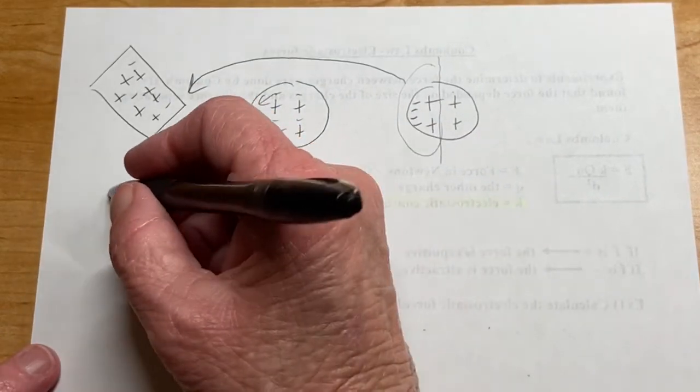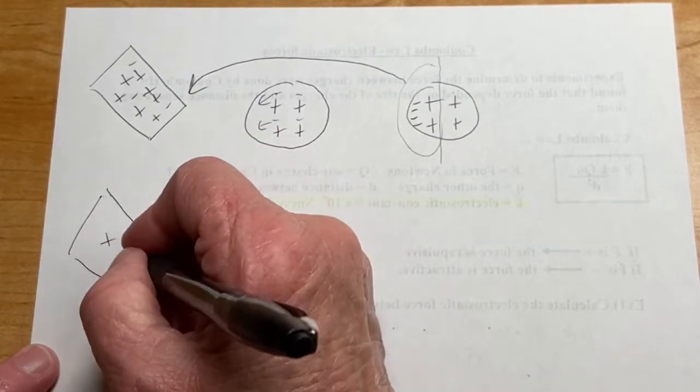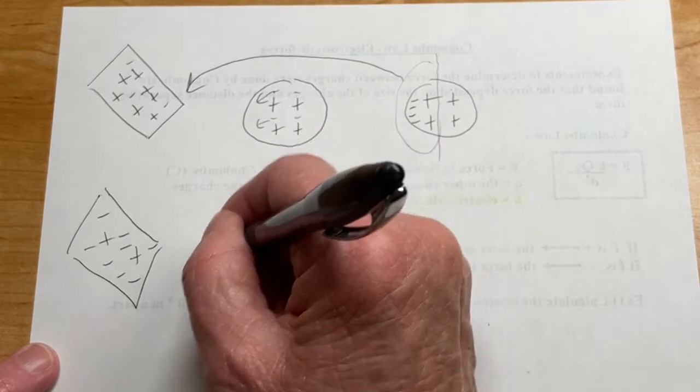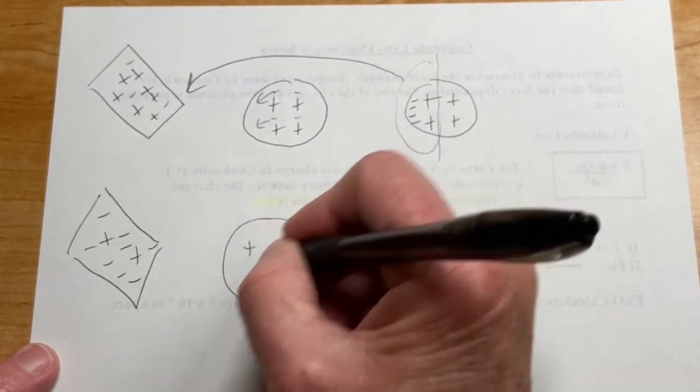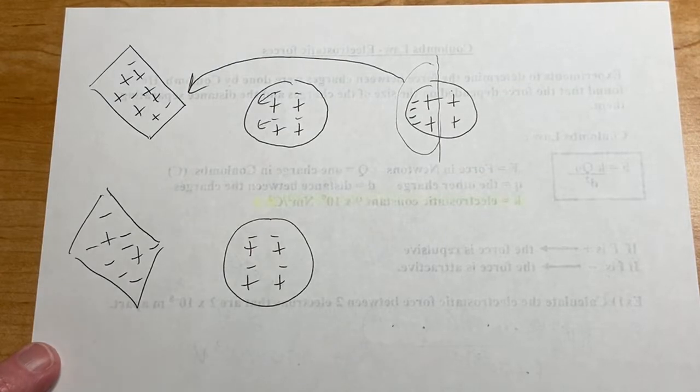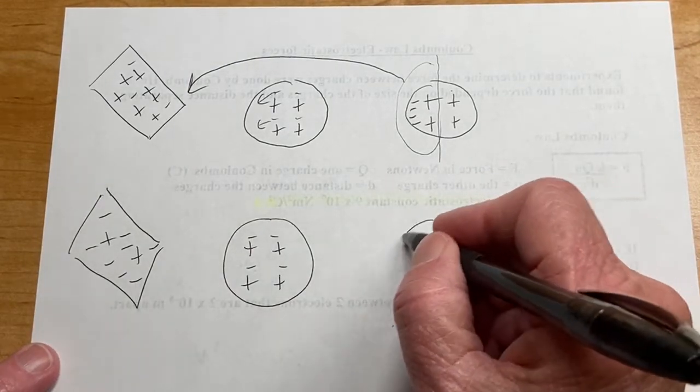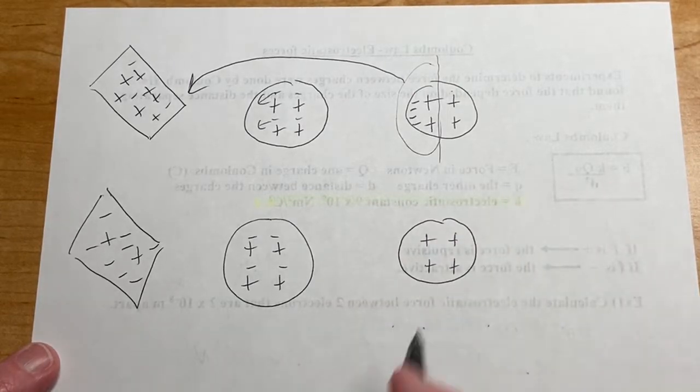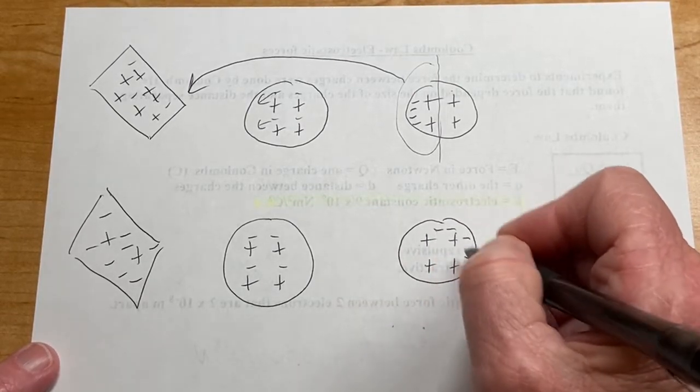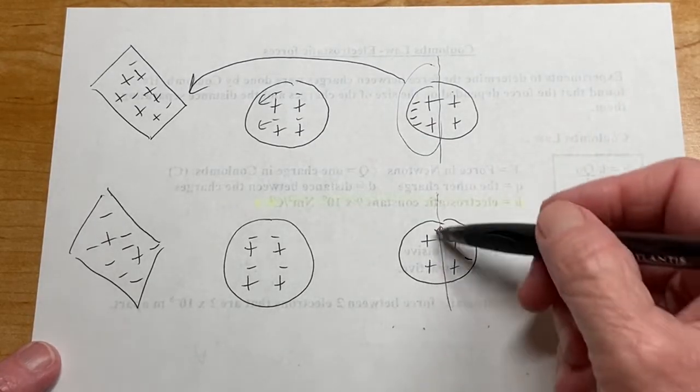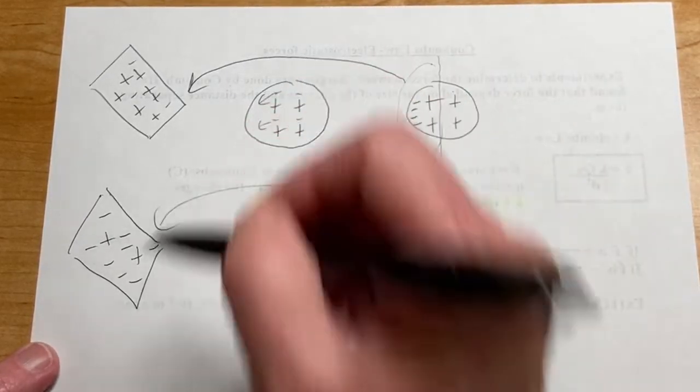In the other case, when the rod was negative, and again I'm going to represent it with lots of negatives. Again, we start out neutral. Plus, plus, plus, plus, plus, minus, minus, all nice and even spread. But once this comes closer, what happens to all the electrons? They move away. They go to the other side, actually. Probably should put them all over there. And again, that makes it a dipole. This side is positive. It attracts.